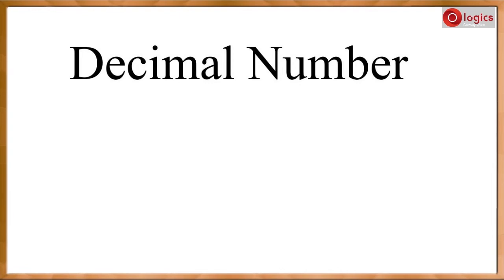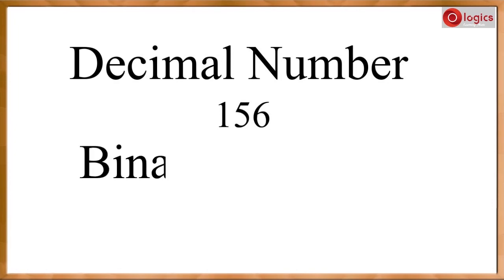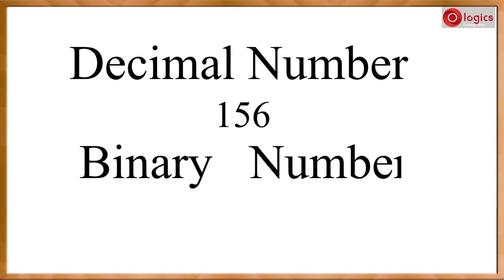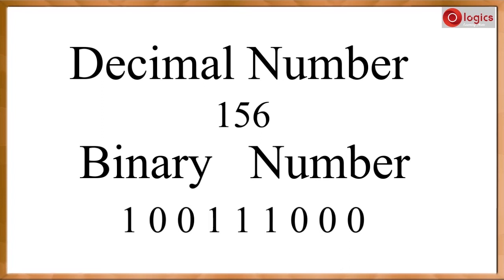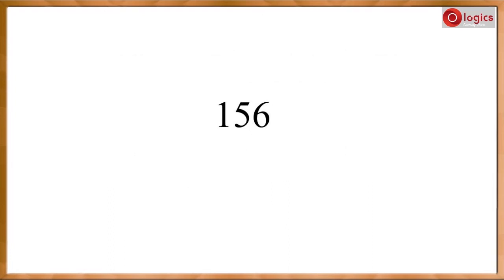Let us understand how to convert a decimal number into a binary number. This is the decimal number one fifty-six. And the binary number for this decimal number is: 1, 0, 0, 1, 1, 1, 0, 0.